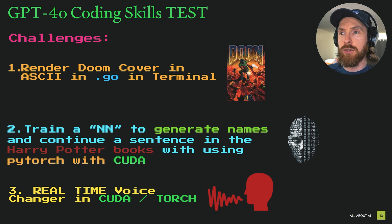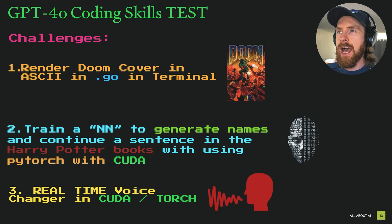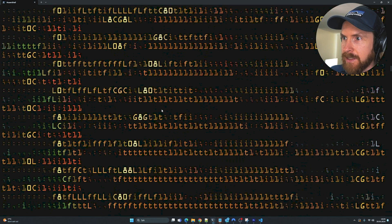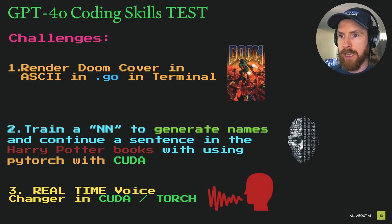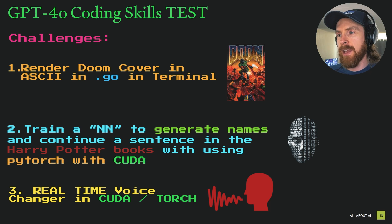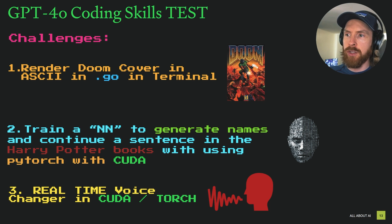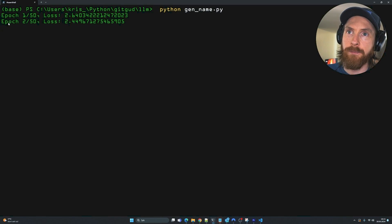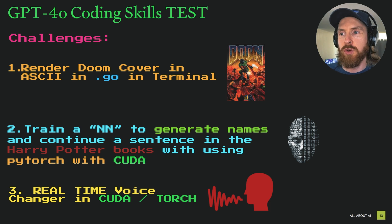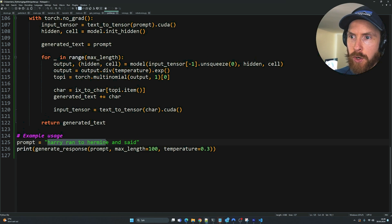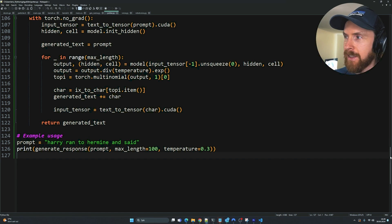The first challenge is to take the Doom cover as a JPG or PNG and use Go (Golang) to convert it to ASCII so we can render it in the terminal. The second challenge is to train a simple neural network — taking a dataset of maybe 20,000 names — and try to generate new names based on that training set. We'll also put in some Harry Potter books and try to continue a sentence by training this neural network.